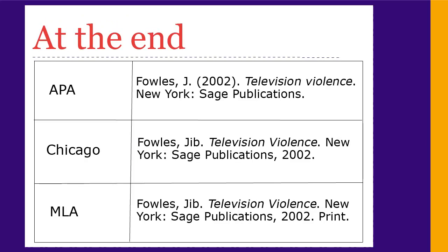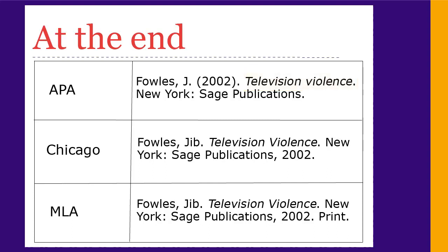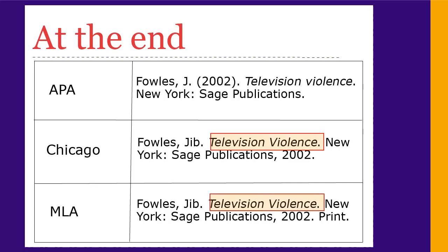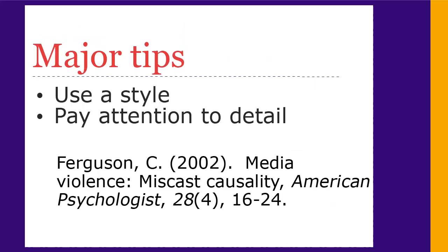There are also differences in formatting the bibliography at the end of your paper. In APA, you only use the author's first initial and capitalize only the first word of the title. In Chicago and MLA, you use the author's whole first name and capitalize all the words in the title. If you're told to use a specific style, make sure you use it. If you aren't told to use a specific style, make sure you pick one and use it correctly.